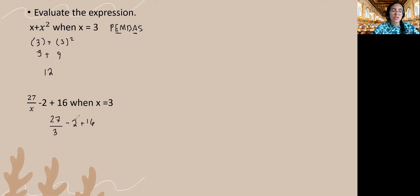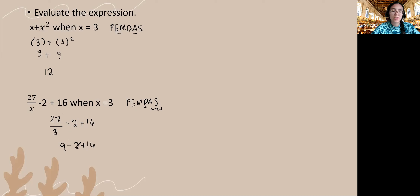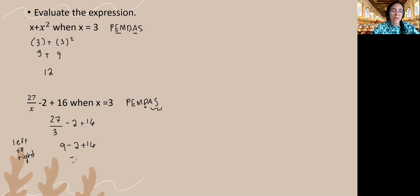I have division, subtraction, and addition here. According to my order of operations, I will do the division first before I tackle the addition or subtraction. So 27 divided by 3 is 9, and I'll bring everything else down. Now because we have subtraction and addition, we move from left to right since they have the same priority. So 9 minus 2 gives me 7, and 7 plus 16 gives me 23.